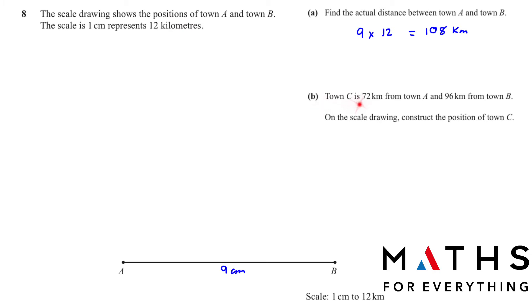B. Town C is 72 kilometers from town A and 96 kilometers from town B. On the scale drawing construct the position of town C. Now how are we supposed to do this? We have A and B here. This is 9 centimeter. Then we have town C is 72 kilometers from A. We have in kilometers we want to change it to centimeters. So we will divide 72 by 12 and we will get 6. So we will make an arc like that of 6 centimeters from A.